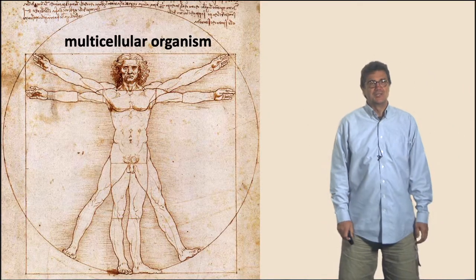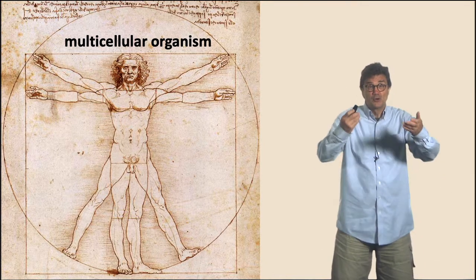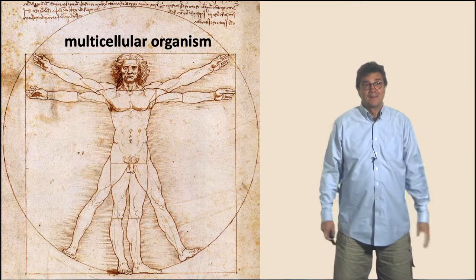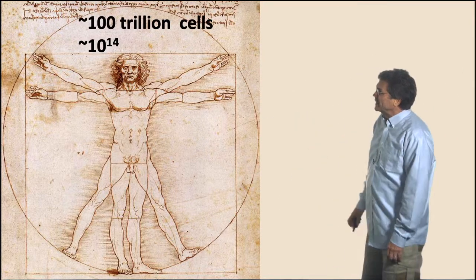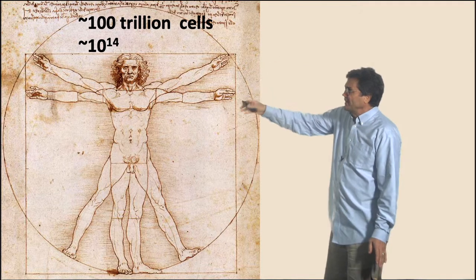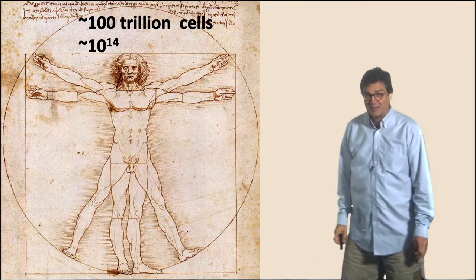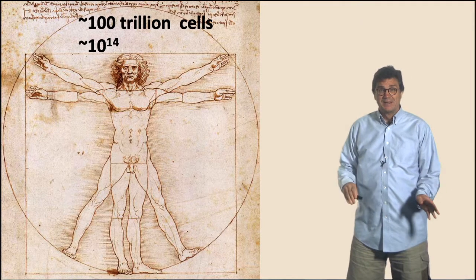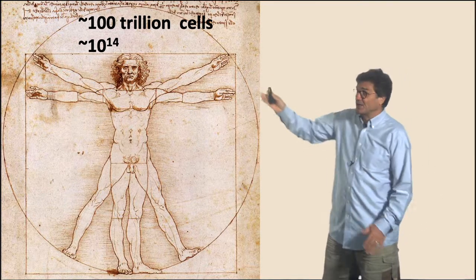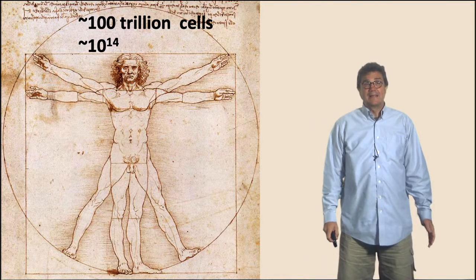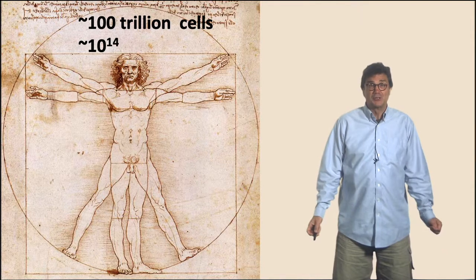Here is Vitruvian Man by Leonardo da Vinci — a multicellular organism. There are roughly 100 trillion cells in your body, maybe 50 trillion. That's 10 to the 14. 10 to the 9 is a billion, 10 to the 12 is a trillion, and 10 to the 14 is a hundred trillion.